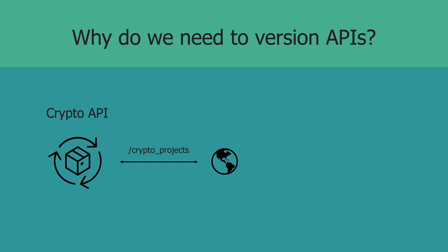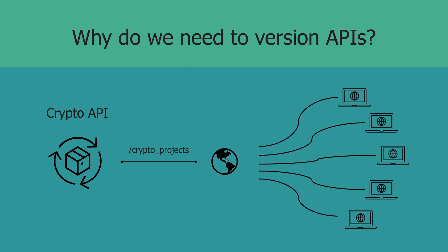So why do we version APIs? As you add new features to your API, fix existing issues, or even revamp the behavior of your system, you need to be able to deliver these changes to your consumers in a non-disruptive manner. For example, let's say you built an API that allows users to retrieve data about your crypto projects. This project has gained some popularity, and you have thousands of websites using your API. They're consuming your data to build amazing dashboards and more cool things.